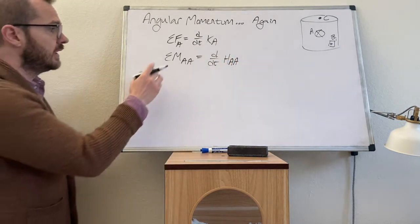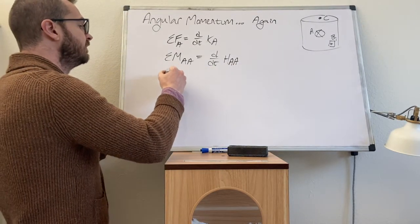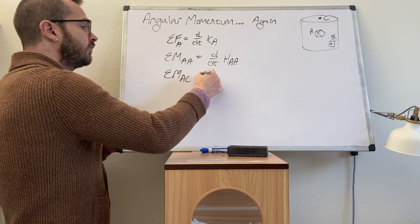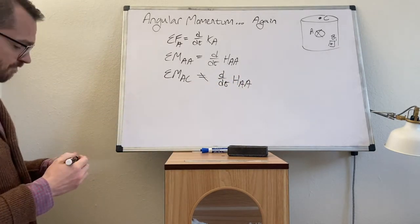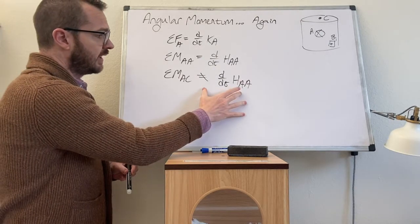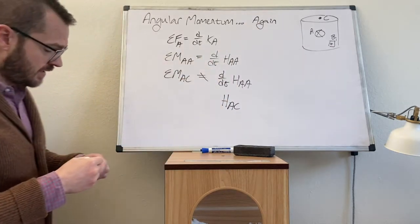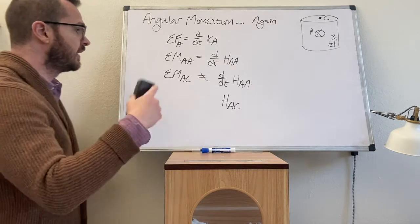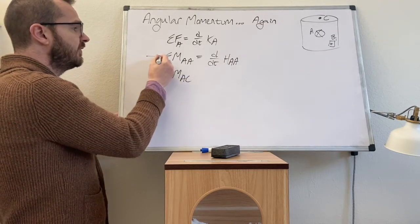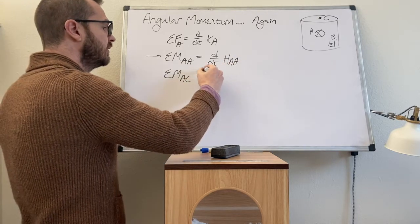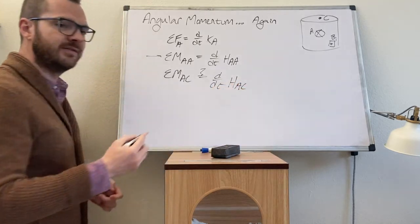In another video we asked: if we can take moments about the center of mass, then of course we can take moments about another point as well. So instead of taking moments at A, what if we took moments at C? We noted that this is not equal to DDT of the angular momentum of A about A. Instead, we found the angular momentum of A about that new point C. So in today's video, we'd like to put these last few things together and determine whether or not a specific relationship is true.